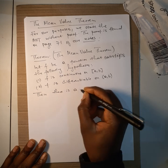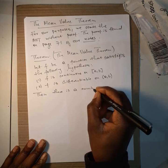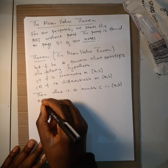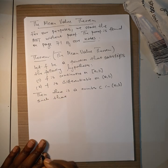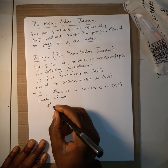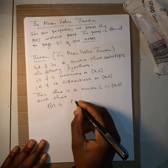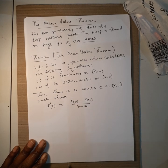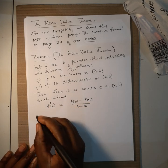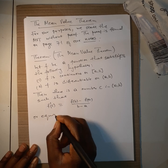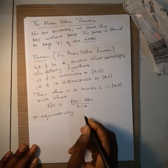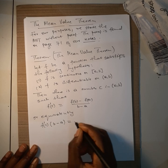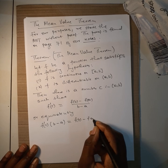If these two conditions are satisfied, then there is a number C in the open interval (a, b) such that F prime of C equals F(b) minus F(a) divided by b minus a. Equivalently, you can rewrite this as F prime of C times (b - a) equals F(b) minus F(a).